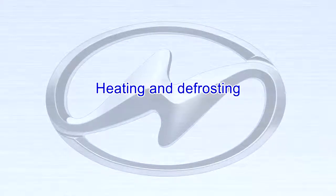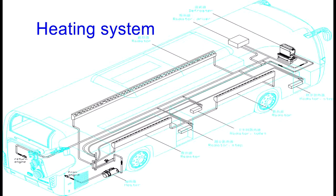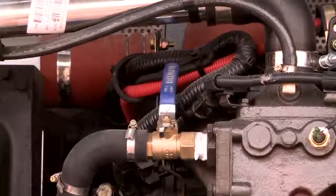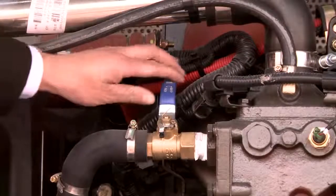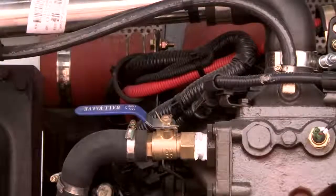Heating and defrosting. The heating system is mainly composed of the heater, radiator, and the heater control panel. Before using, first open the two water valves of the heater pipeline.